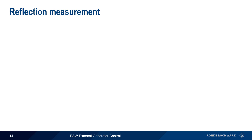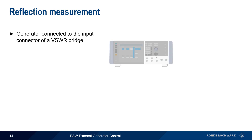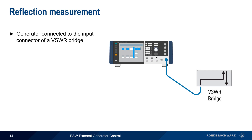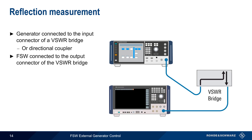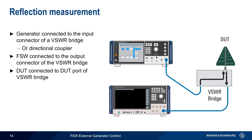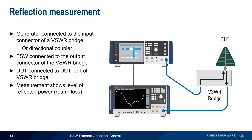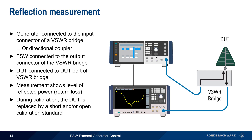Next we'll look at a sample reflection measurement. The generator output is connected to the input connector of a VSWR bridge, or suitable directional coupler. The FSW is connected to the output connector of the VSWR bridge, and the DUT — here an antenna — is connected to the DUT port of the VSWR bridge. When measurements are made, these will show the level of reflected power or return loss. Note that during calibration, the DUT would be replaced by a short and/or an open calibration standard.